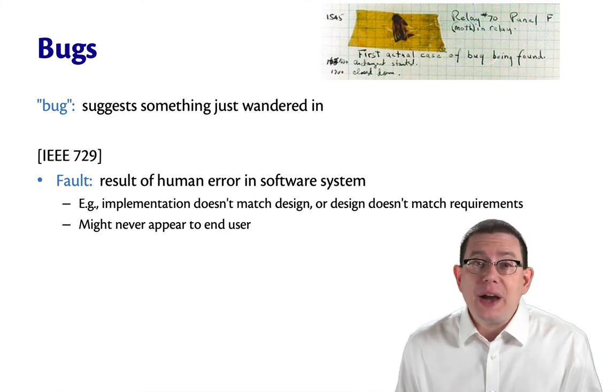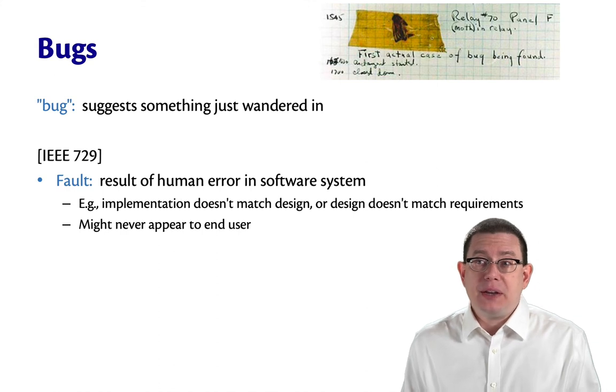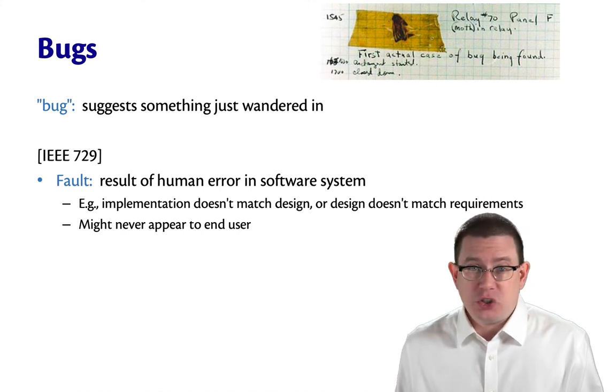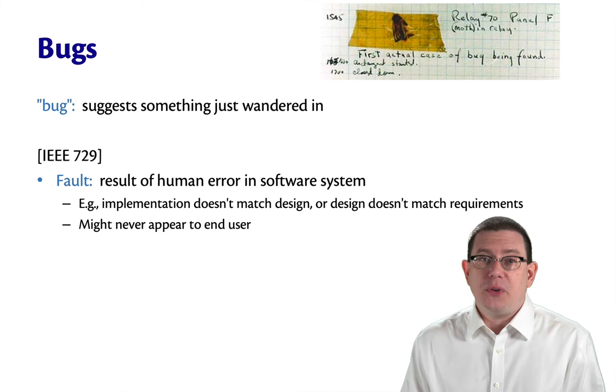For example, maybe you write a line of code that has a fault in it, but no one ever manages to trigger that line of code so the fault isn't exposed.